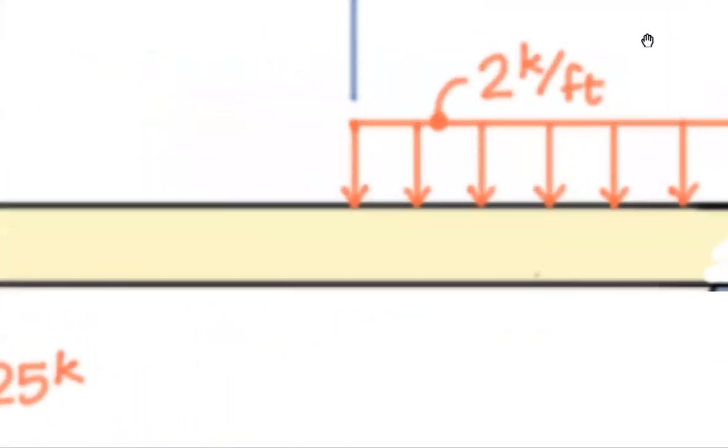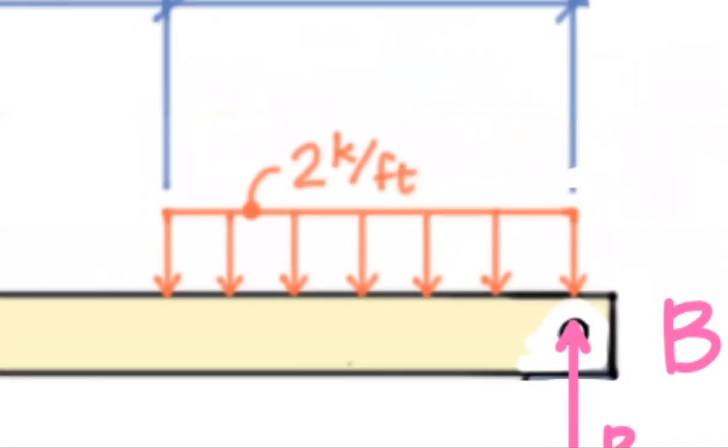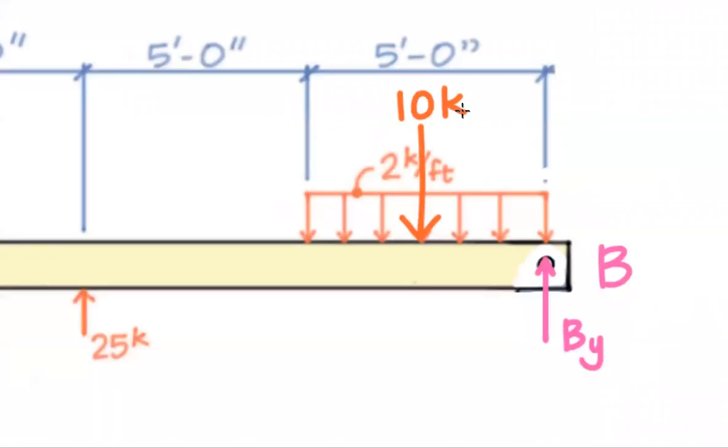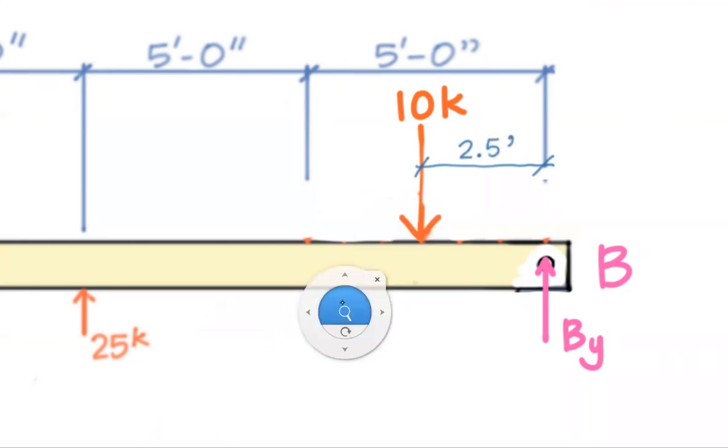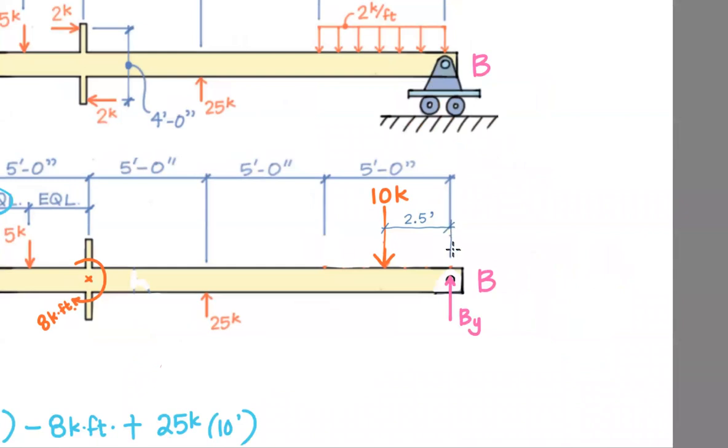So I'm going to take this two kips per foot distributed load and replace it with a concentrated force right in the middle. So I would just say two kips per foot times five feet. So that gives me a statically equivalent force of 10 kips. And of course, once I bring that to the party, I do need to get rid of this line load. You don't want to double count that. So we're going to swap it out for a statically equivalent system. And also note that that location is halfway from B, which is 2.5 feet.